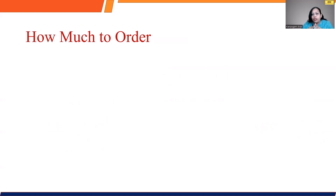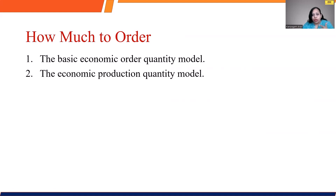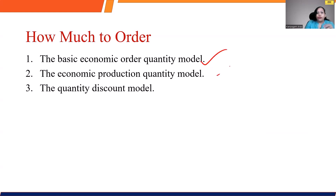In talking about the quantity decisions, we have three important models. The first is the basic premises Economic Order Quantity — we call this the EOQ model. The second method is the Economic Production Model (EPQ). And the third one is Economic Order Quantity with Quantity Discount model. In this specific video, I'm going to cover the first model — the basic EOQ model. In subsequent videos, EPQ and EOQ with quantity discounts will also be covered.